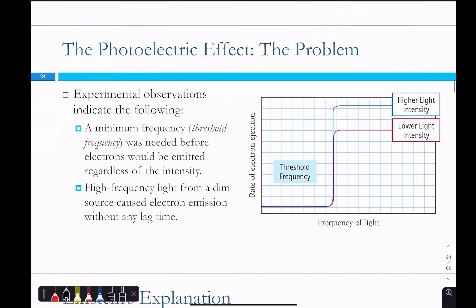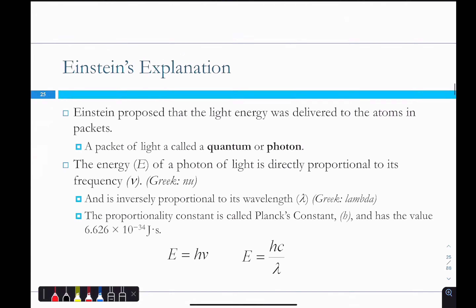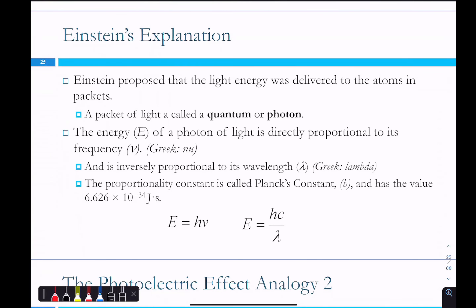In actuality, that's not what happened. Looking at frequency of light versus the rate of electron ejection, there is a threshold frequency for each metal. Below that frequency, no electrons are ejected — no matter how bright the light is. As soon as you exceed that threshold, increasing the intensity of the light (as long as it's high enough frequency) ejects more electrons. This suggested that the concept of a continuous beam of energy charging up electrons was not a complete picture of what was happening.